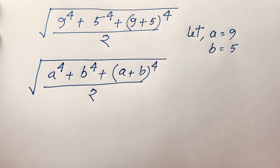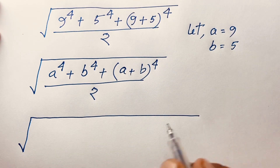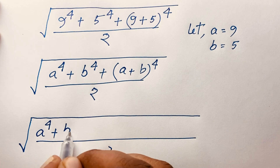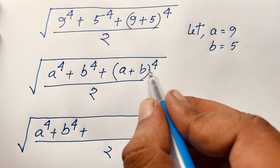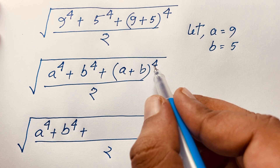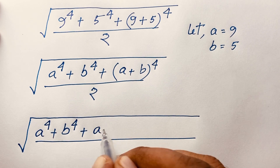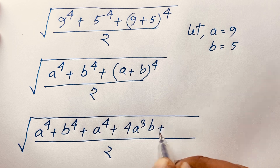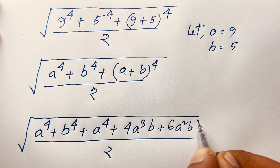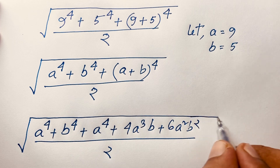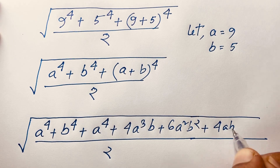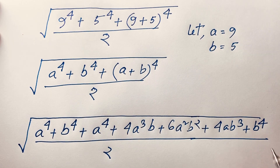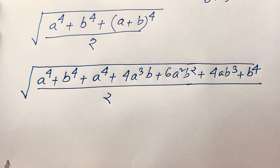Now we expand a plus b whole to the power 4 using Pascal's law. According to Pascal's law: (a+b)⁴ equals a⁴ plus 4a³b plus 6a²b² plus 4ab³ plus b⁴. We substitute this expansion into the expression under the square root.